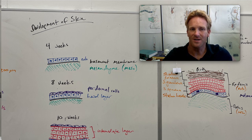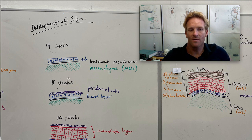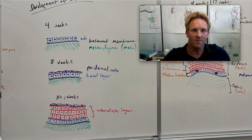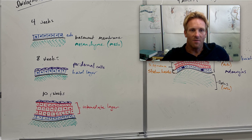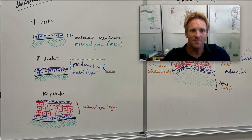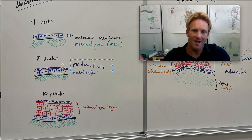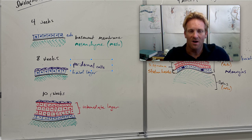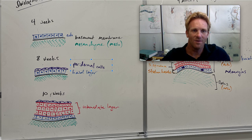So by eight weeks we've got some changes that have already started to occur. This ectoderm has now divided into two layers. We have this basal layer that's on the bottom next to the basement membrane, and then you have these paradermal cells which have formed and they lie superficial to the basal layer. You can see they're flatter, they're almost squamous in their shape if you remember that from anatomy and physiology.